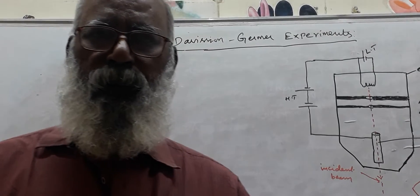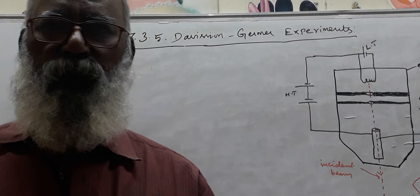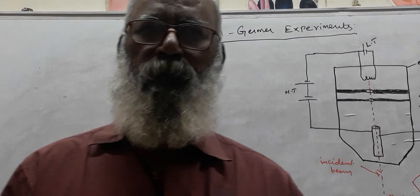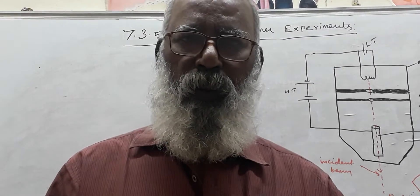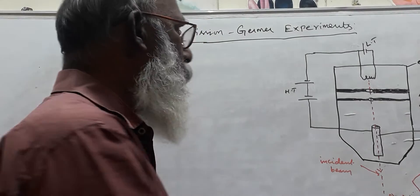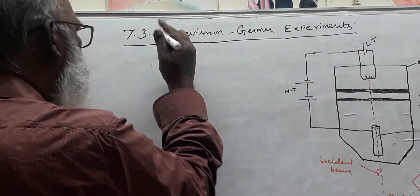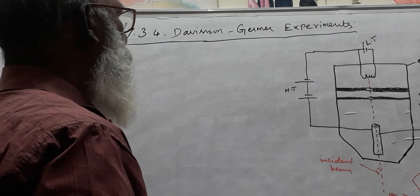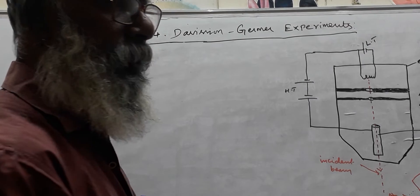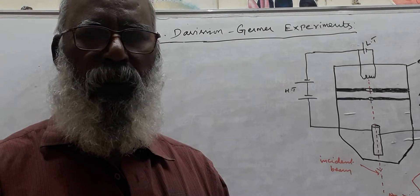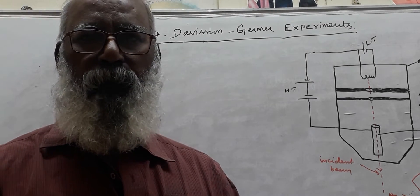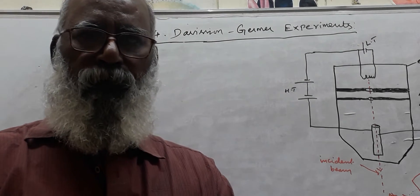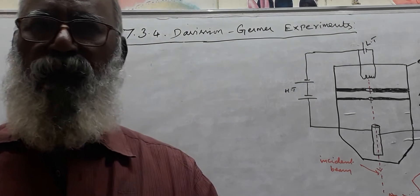Hi friends and my dear students. This is Trained Physics second volume, topic 7.34 — the Davisson-Germer Experiment. What is the aim of this experiment?